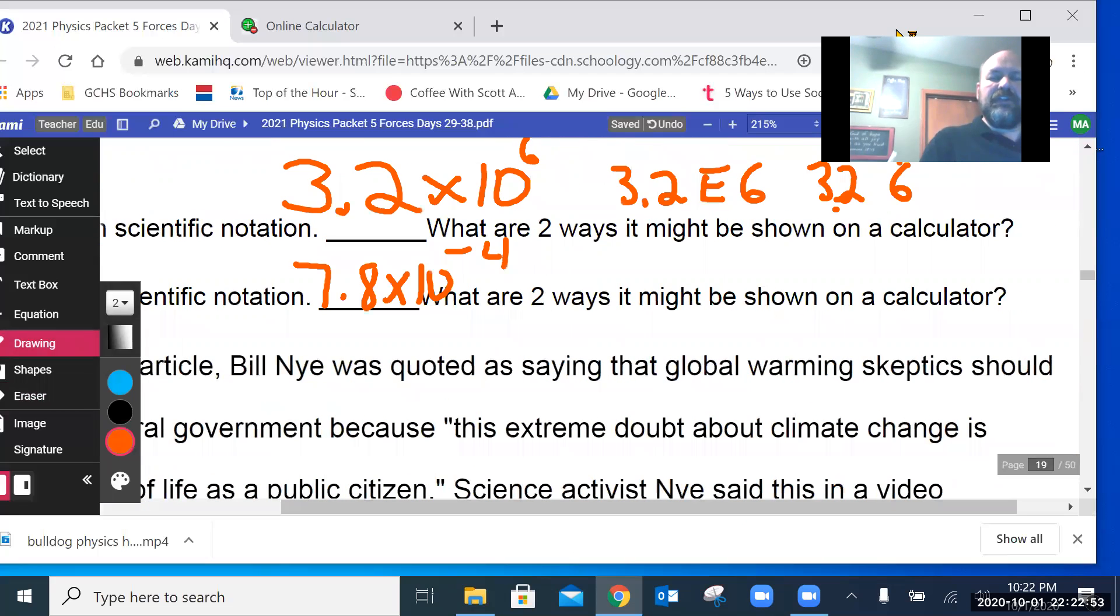So that's going to be to the negative fourth. Two ways to be shown on the calculator will be 7.8 with an e negative four or 7.8 just simply a space and a negative four.